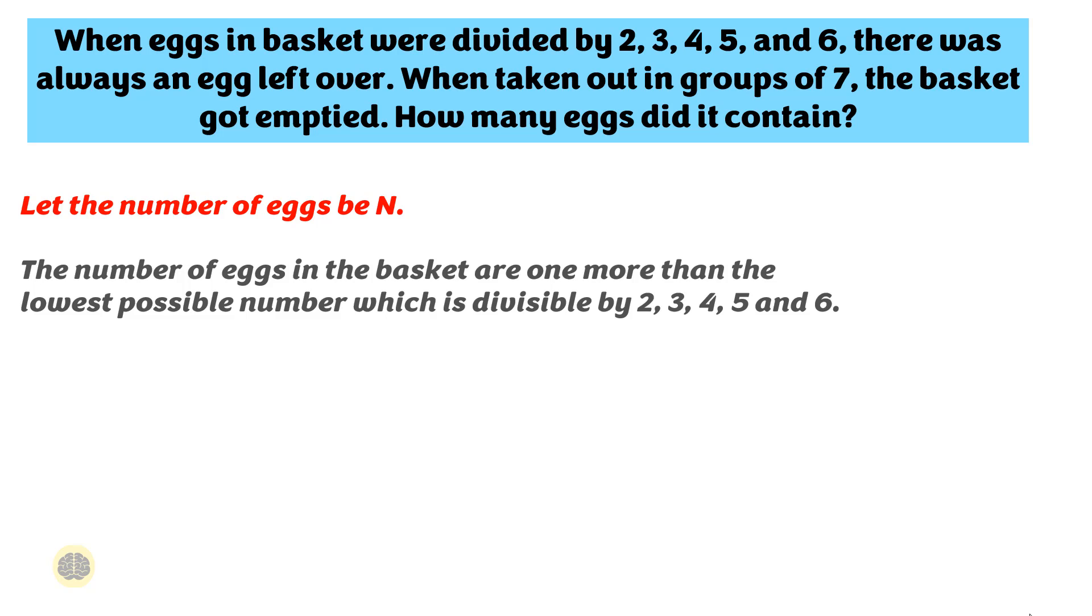This essentially implies that the number of eggs in the basket are 1 more than the lowest possible number that is LCM which is divisible by 2, 3, 4, 5 and 6.